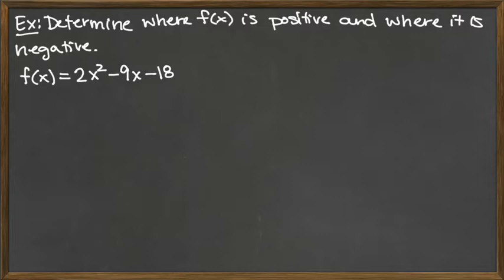The first thing we need to do is find out where this function is 0 and undefined. To find out where it's 0, we're going to need to factor this. It is also a quadratic, so we could use the quadratic equation, but we'll practice factoring here. We need to find two numbers that multiply to give us a times c. a times c would be 2 times negative 18, so we're looking at negative 36.